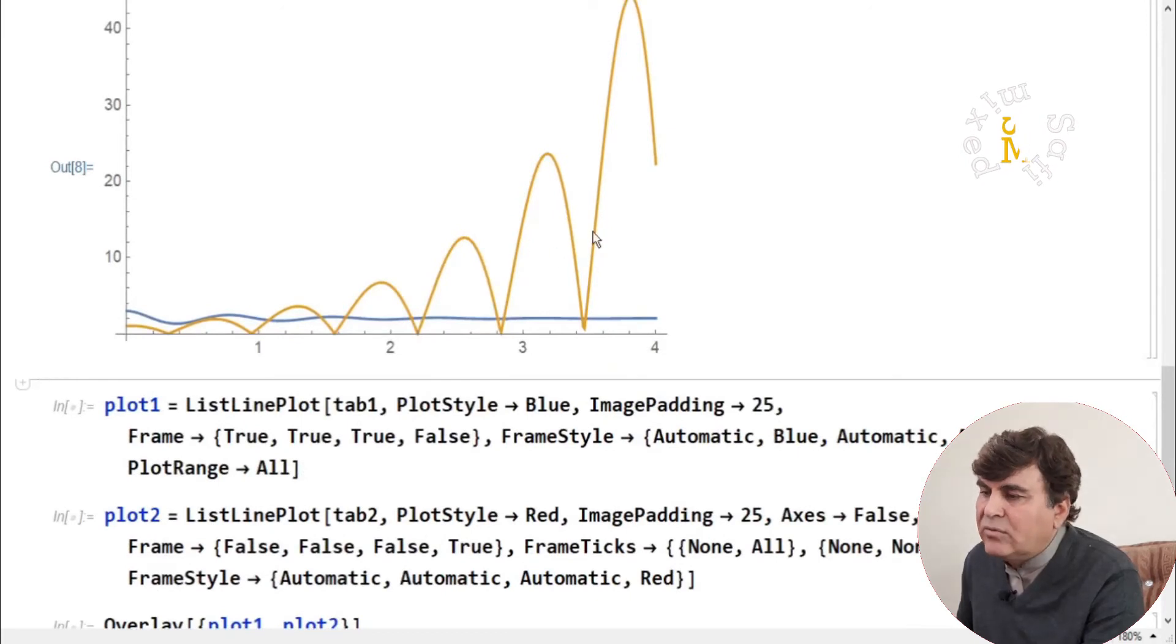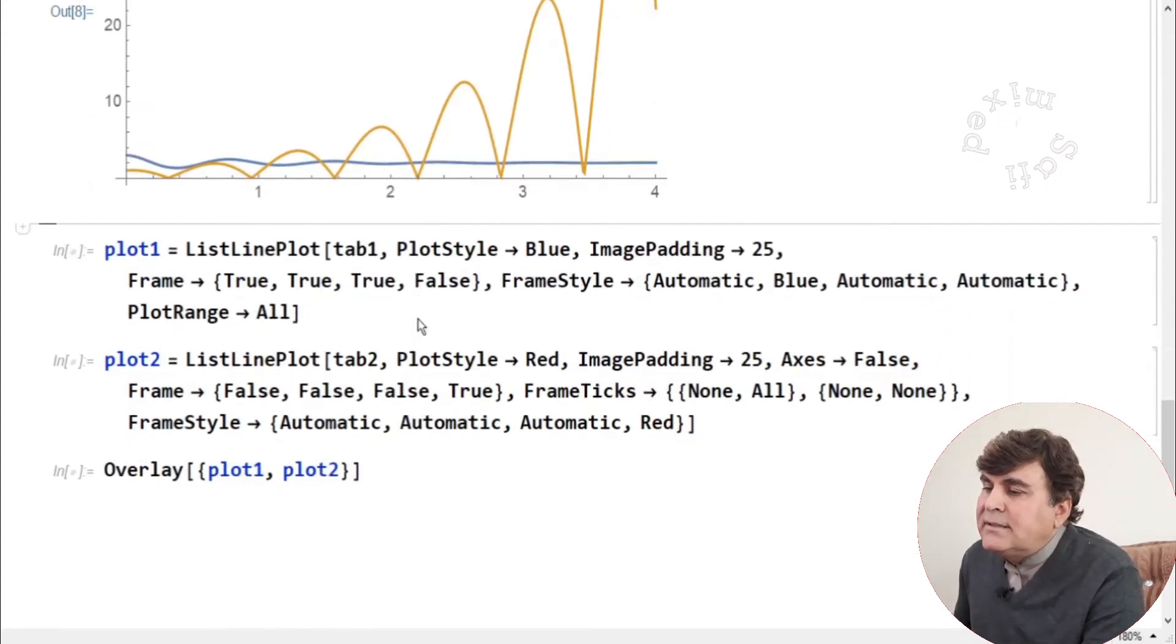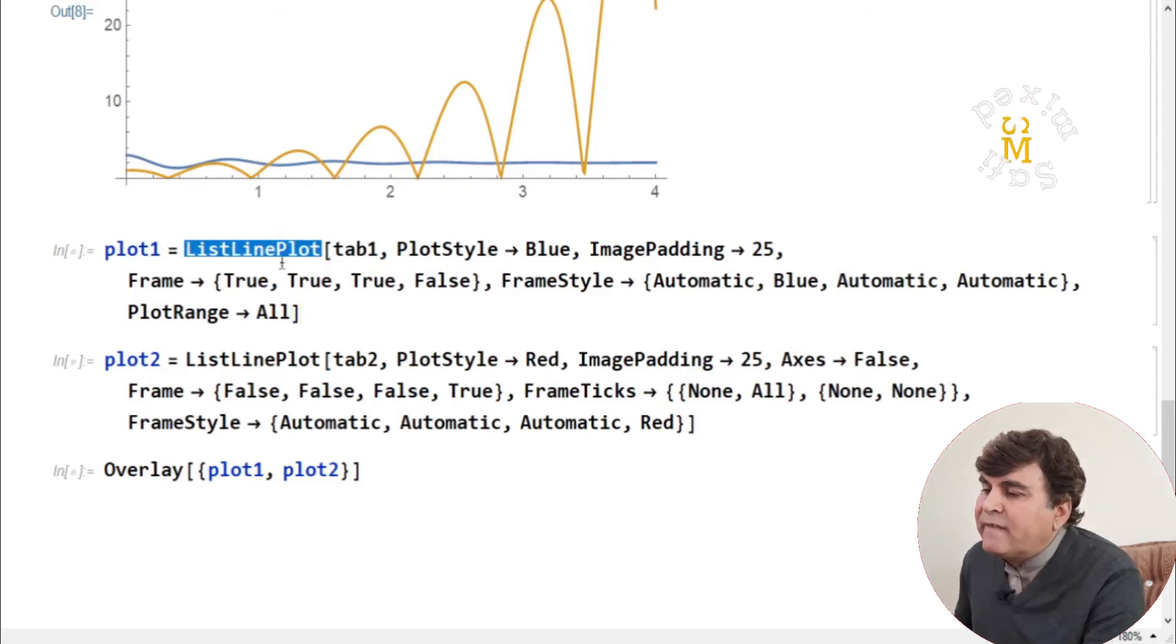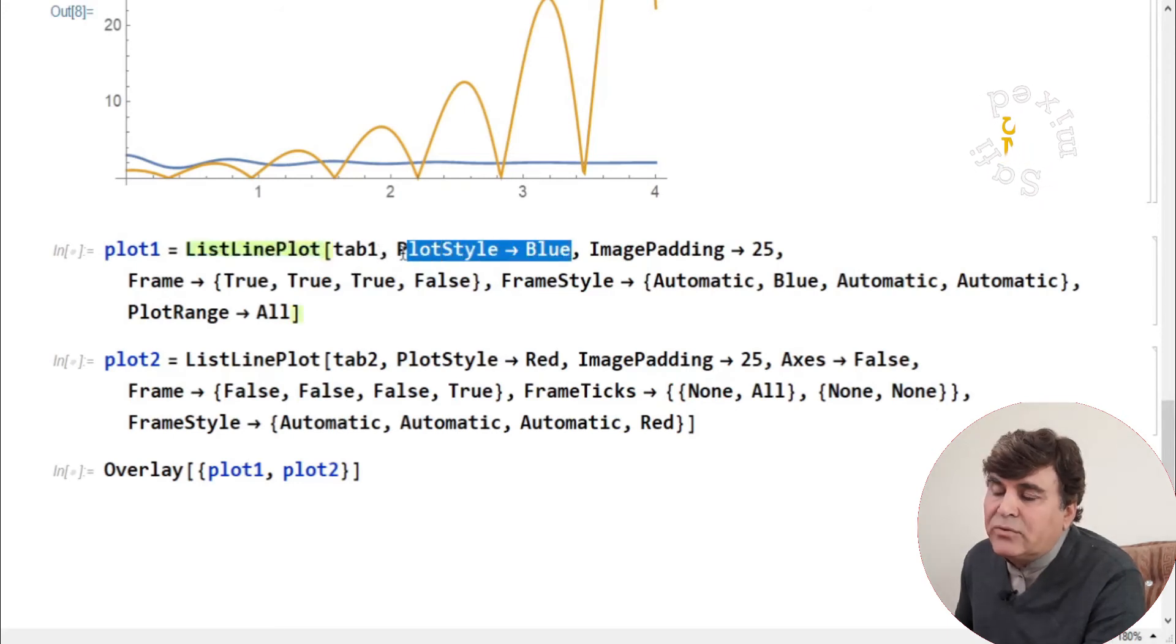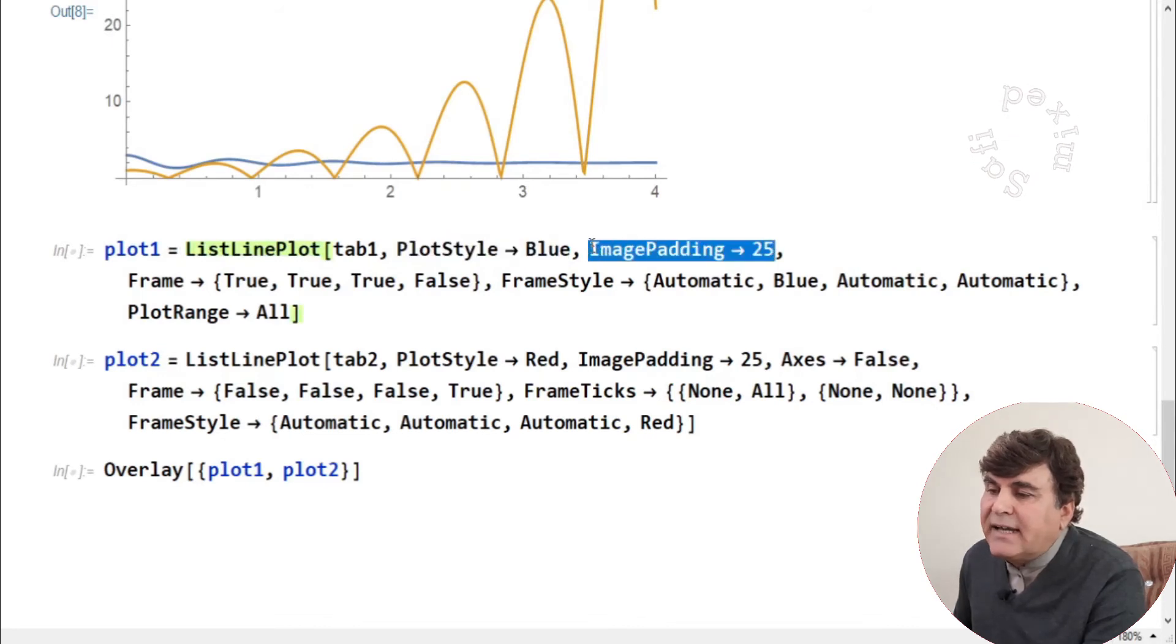If I plot this, I'll get the same plot like before. The only difference is the second curve is now colored yellow. Now let's come to that point. Here I want to plot the data in table 1 through the command ListLinePlot with some other options. PlotStyle blue will make the color blue. ImagePadding resizes the image, and I'll keep this image padding same for both so that they could fit accurately into the frame.